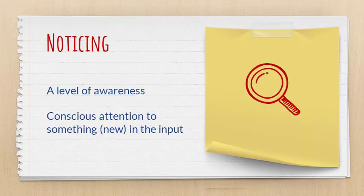So what is noticing? Noticing, according to Schmidt, is one level of awareness and it involves conscious attention to something in the input. And Van Patten adds that it's noticing something new or different in the input.